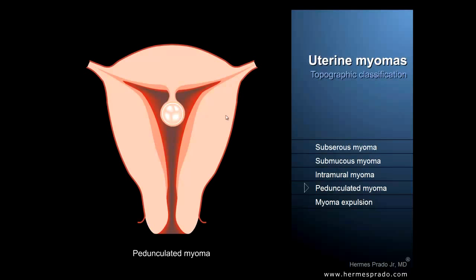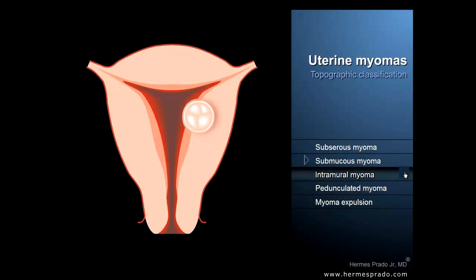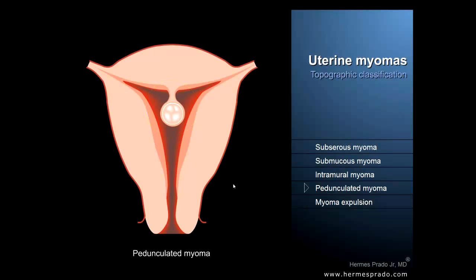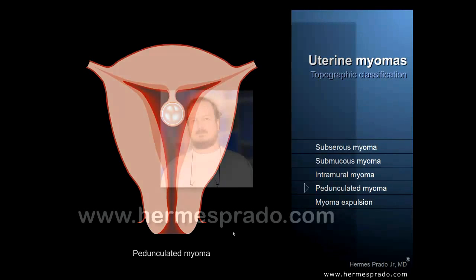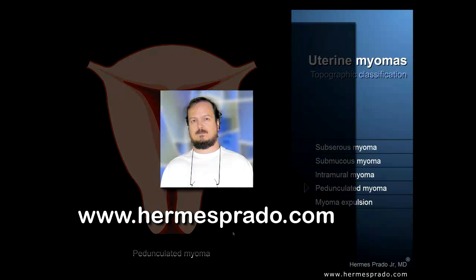So in a few minutes we were able to understand what uterine fibroids are, how they are classified according to their location, and which are the main complications of each one. My name is Emis Brander Jr., and I am a medical doctor and an artist, and this interactive digital animation was made by me. You can find more interesting medical themes like this one on my personal website. I hope I could have helped you clarify your thoughts about this important medical issue on women's health. Thank you very much for your attention.